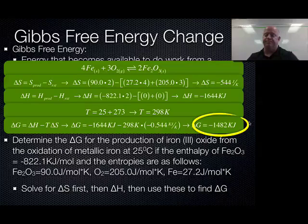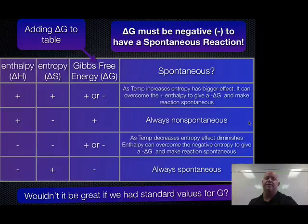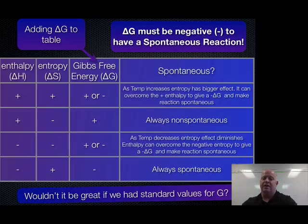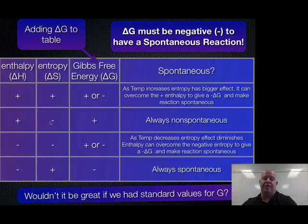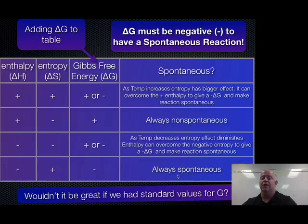The next thing we covered in our notes is Gibbs free energy in terms of spontaneity and its sign convention. Just like enthalpy and entropy, if you have a negative Gibbs free energy, the reaction is spontaneous. In the plus/minus scenario for enthalpy and entropy, ΔG is always positive — always non-spontaneous. With minus/plus, ΔG is always negative — always spontaneous.